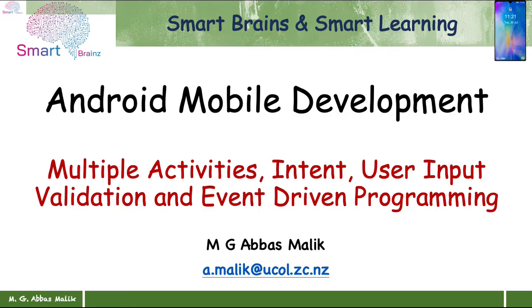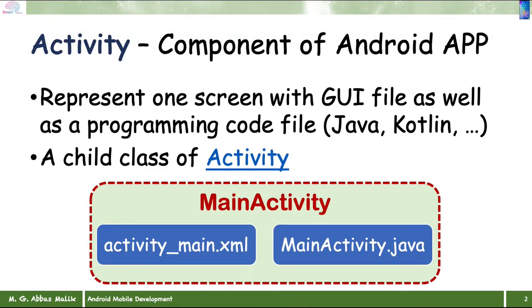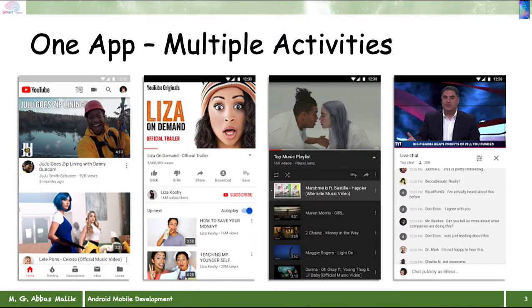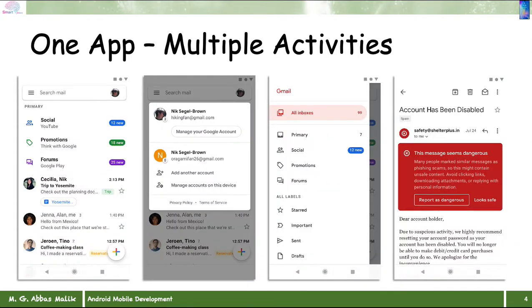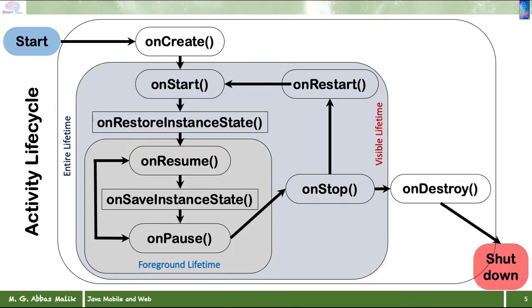As you know, the main activity contains two files: one is the XML that is the GUI layout, and the other one is the Java code file. It is essentially a child class of the Activity class. One particular application can have multiple activities — for example, a YouTube application, Gmail, or some game application. This is the activity lifecycle.